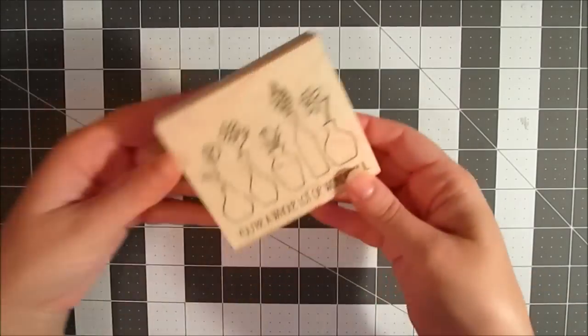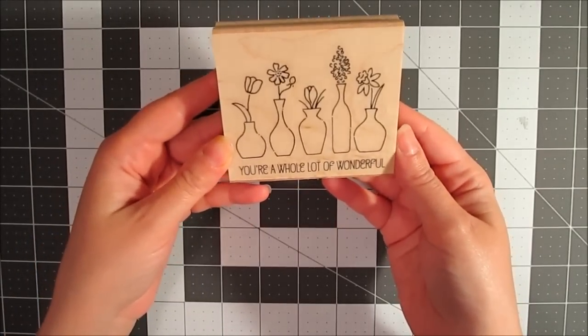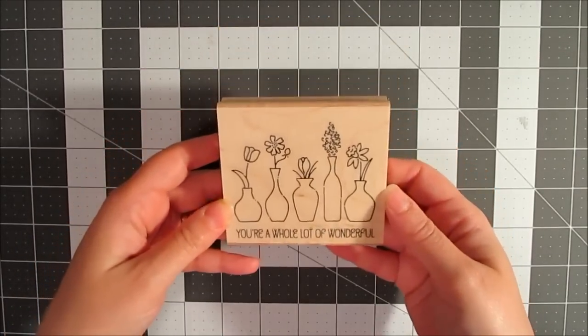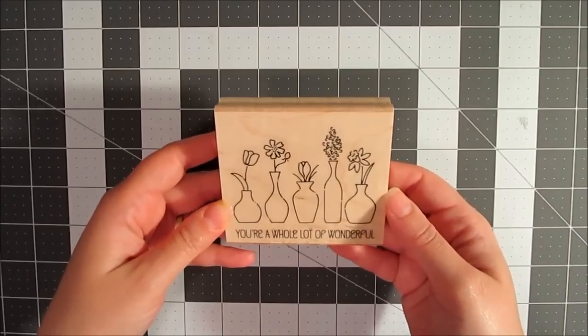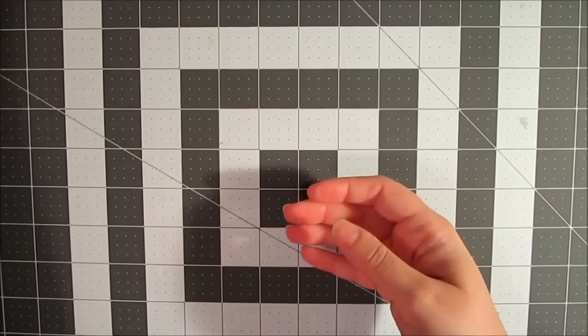He also got me the Vivid Vases wood stamp which I'm super excited about. It's got five lovely vases on it and it says 'you're a whole lot of wonderful' and I just thought it was so cute. I had to have it. He's just so sweet, that Michael.